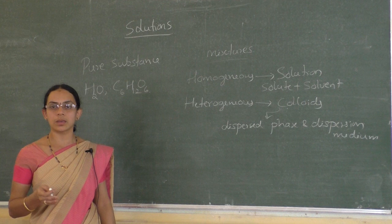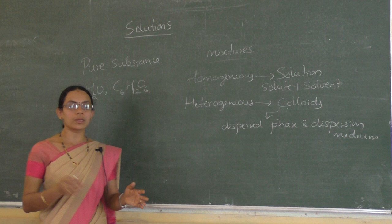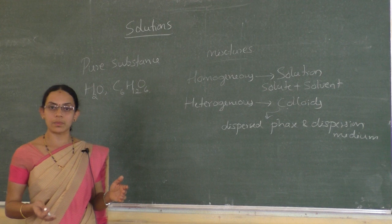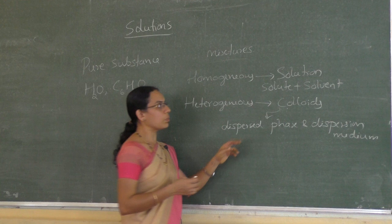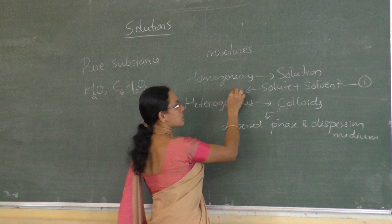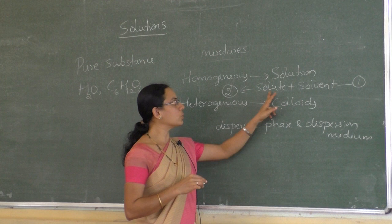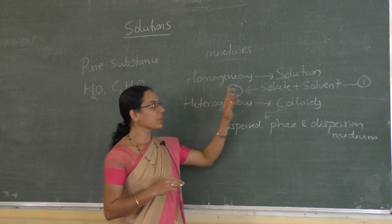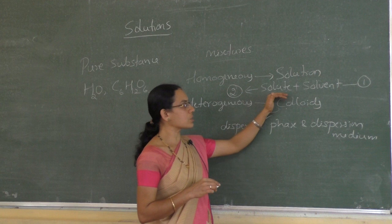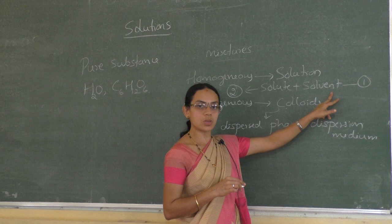If you prepare a mixture of salt and water, we take water in a larger quantity. In that case, water becomes the solvent and salt, added in a smaller quantity, becomes the solute. In a homogeneous mixture, the component present in larger quantity is called solvent, and the one present in smaller quantity is called solute.